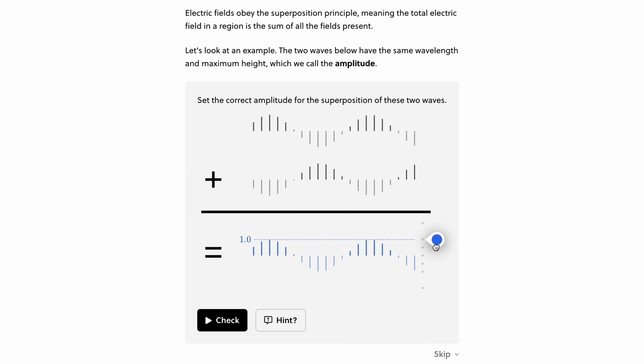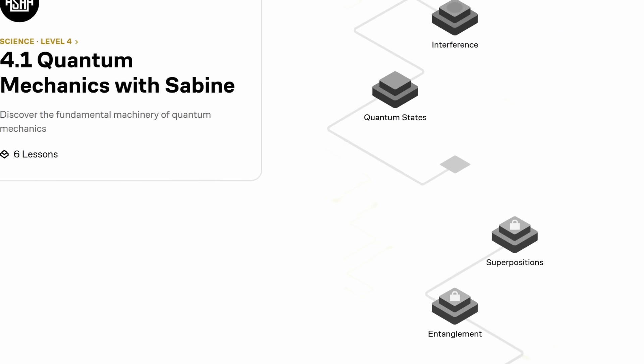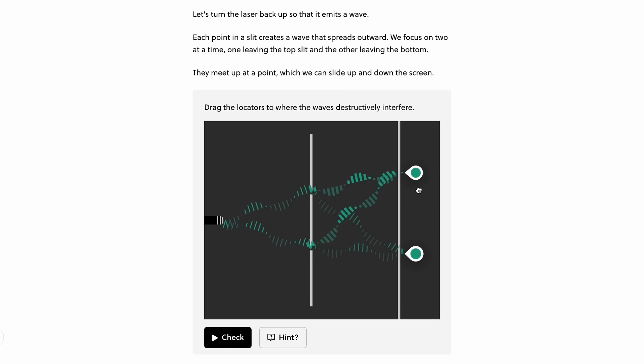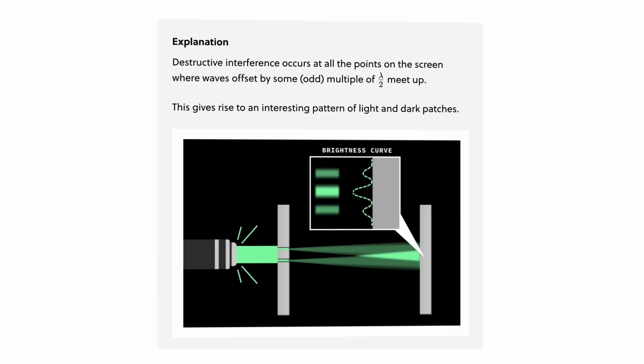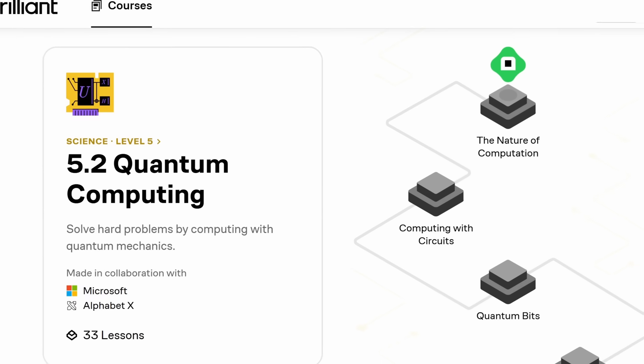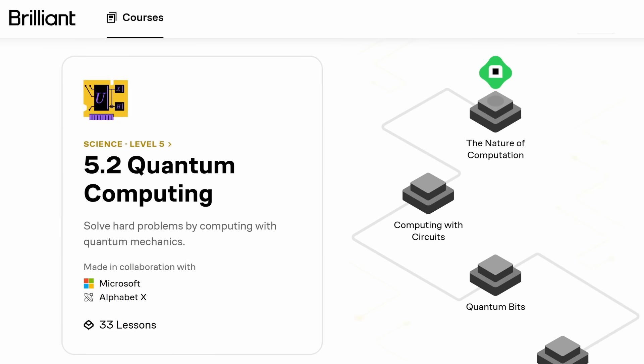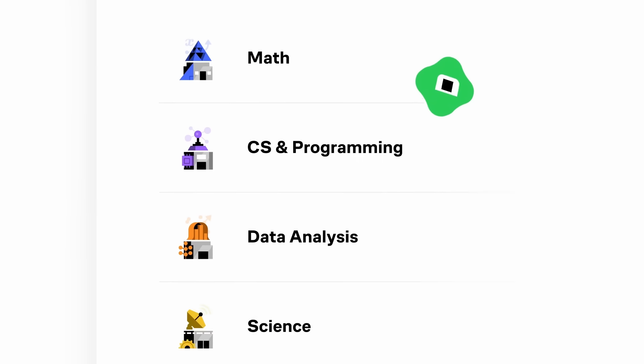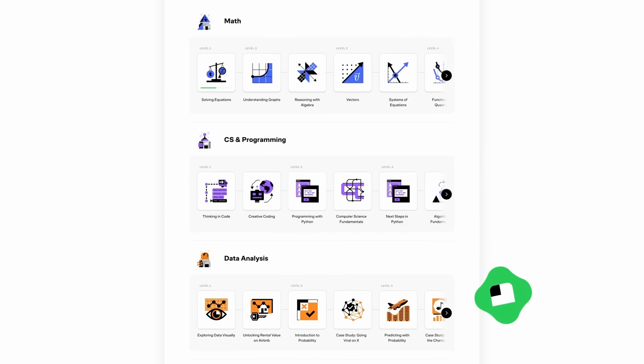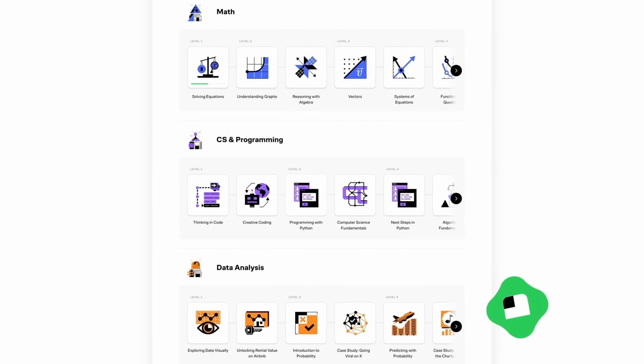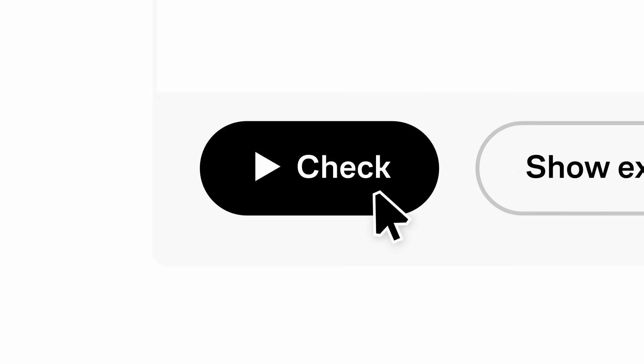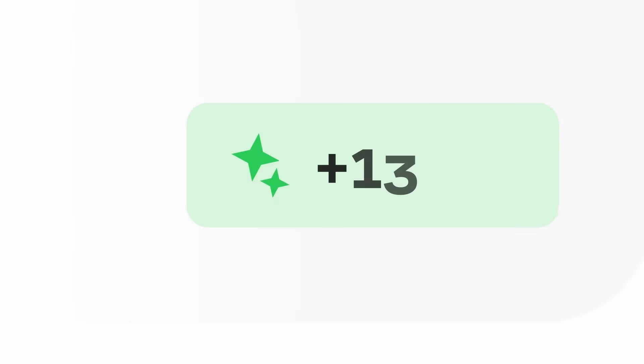My course will help you understand what a wave function is and what the difference is between superpositions and entanglement. It also covers interference, the uncertainty principle, and Bell's theorem. And after that, you can continue maybe with a course on quantum computing or differential equations. Brilliant offers courses on a large variety of topics in science, computer science, and mathematics.